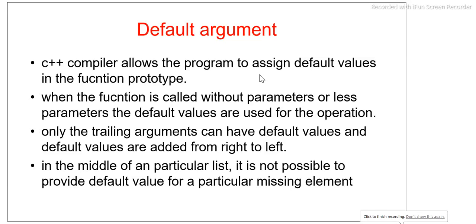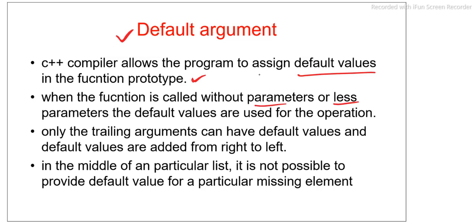Today in this lecture of object-oriented programming with C++, we will discuss a very important topic: default arguments. The C++ compiler provides a facility where the program can assign some default values in the function prototype declaration. So during prototype declaration, we can initialize some default values. Suppose a function is called without parameters or with fewer parameters — in that case, those previously assigned default values will be used for the function operation.